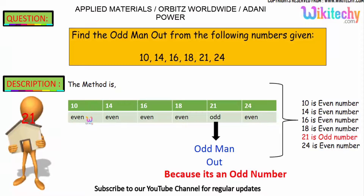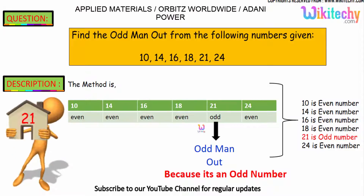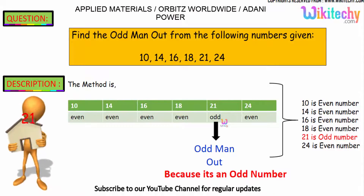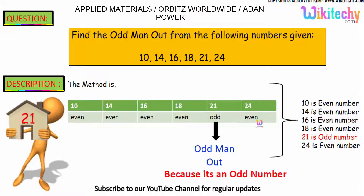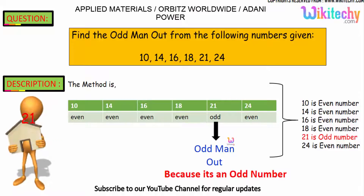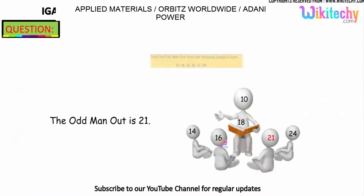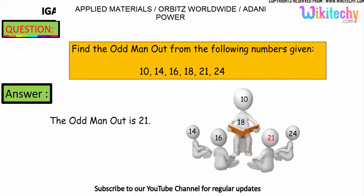We have 10 — even number; 14 — even number; 16 — even number; 18 — even number. 21 is an odd number, and 24 is an even number. So 21 is the odd man out here. The answer is 21.